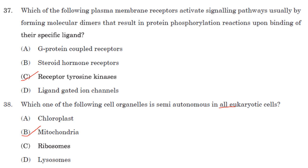Which cell organelle is semi-autonomous in all eukaryotic cells — meaning both plants and animals? It is mitochondria, which is the correct answer. Chloroplast is present only in plants, so it is not found in all eukaryotic cells.